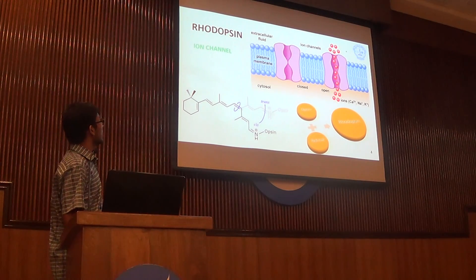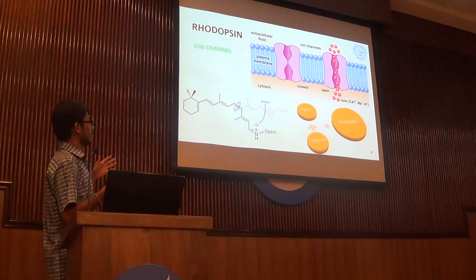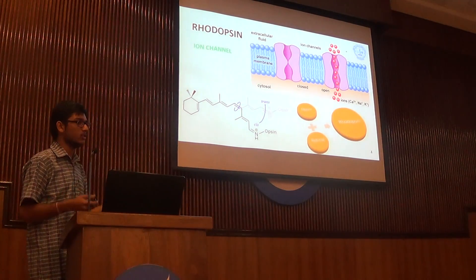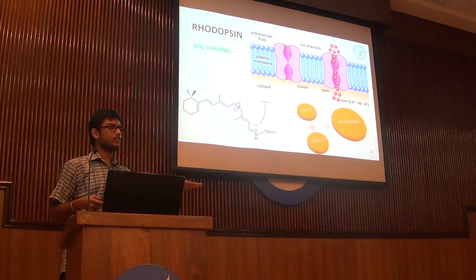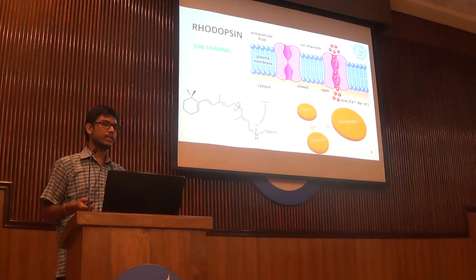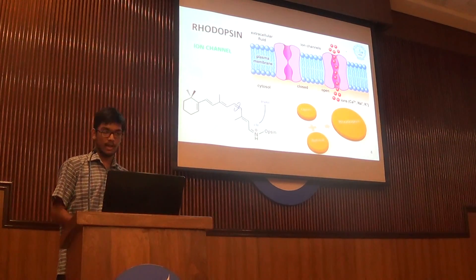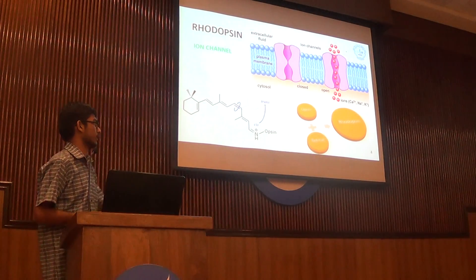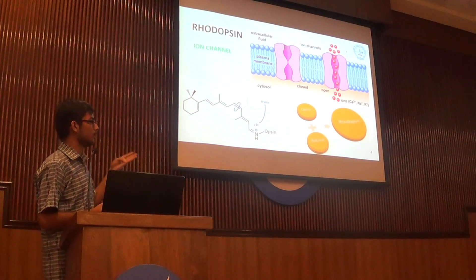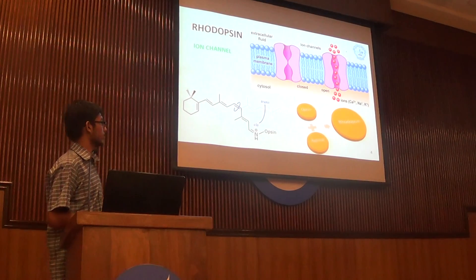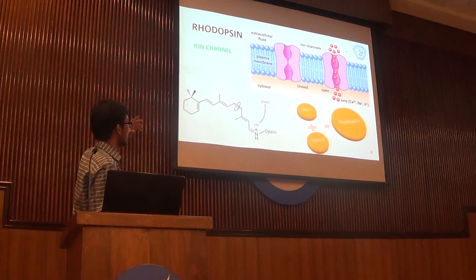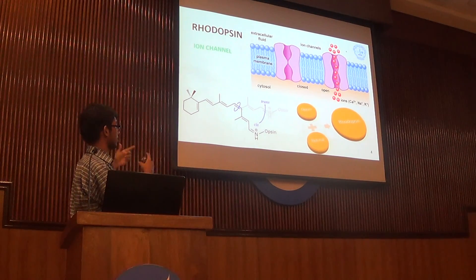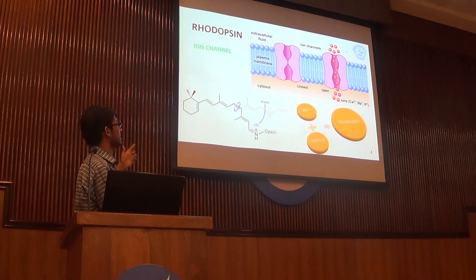Let us look at how our system looks. Rhodopsin is basically a molecule present in the retina of the eyes in humans. But what does it do in bacteria? Bacteria present at the marine sea bed do not need to see. So rhodopsin there acts as an ion channel, moving ions through the cell membrane. Rhodopsin is formed of two parts: one is the opsin protein, and the other is the retinal molecule. The retinal molecule undergoes a cis-trans isomerization, giving the rhodopsin two characteristic states — an open state and a closed state — thereby acting as a switch.